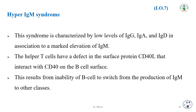Hyper IgM syndrome is characterized by low levels of IgG, IgA, and IgD in association with a marked elevation of IgM. Helper T cells have a defect in the surface protein CD40 ligand that interacts with CD40 on the B cell surface. As a result, there is an inability of B cells to switch from production of IgM to other classes, so IgM continues to be produced instead of IgG, IgA, or IgD.